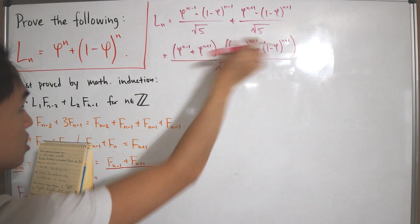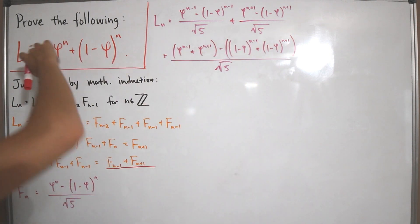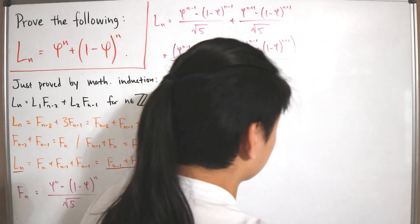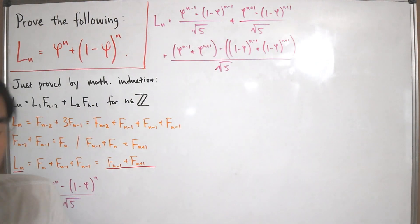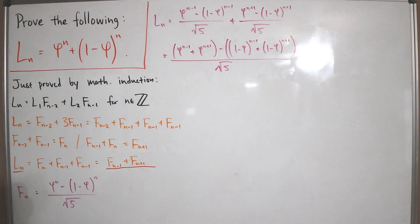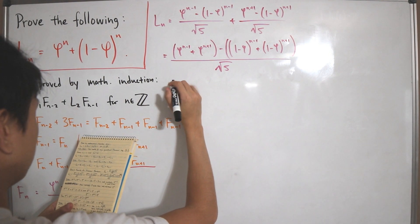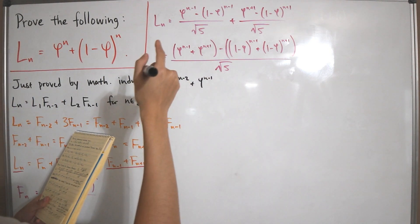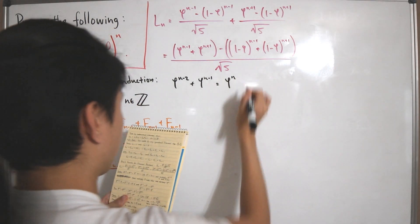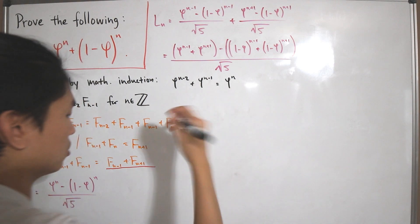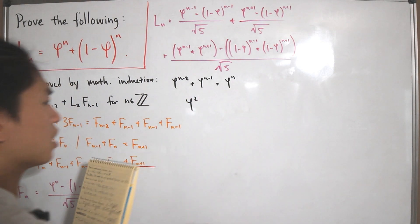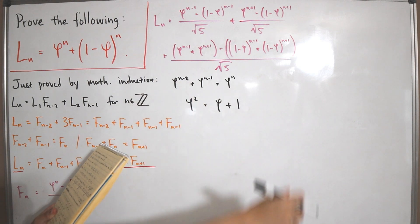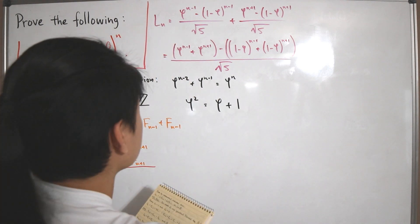We need to calculate phi^{n-1} + phi^{n+1} and (1-phi)^{n-1} + (1-phi)^{n+1} separately. Using the golden ratio identity phi^2 = phi + 1, multiply both sides by phi^{n-2} to get phi^{n-2} + phi^{n-1} = phi^n. Then multiplying phi to both sides of this: phi^{n-1} + phi^n = phi^{n+1}.